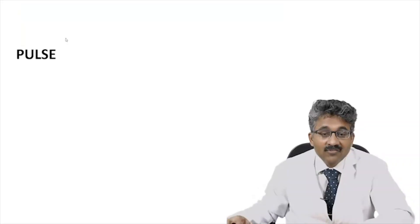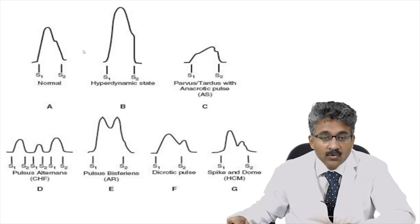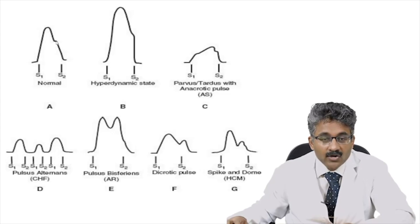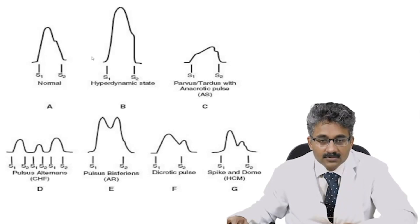Regarding the character of the pulse: the normal pulse has two waves — the percussion wave and the dicrotic wave. Between these two waves is the dicrotic notch (also called incisura). The wave before the dicrotic notch is the percussion wave; the wave after is the dicrotic wave.